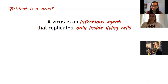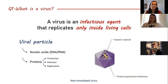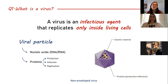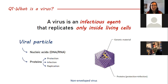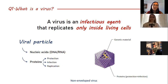A virus is an infectious agent that replicates only inside living cells. Viruses are free in nature in the form of viral particles. Viral particles are formed of nucleic acids — they have a genome, a genetic material inside a structure called a capsid that is formed of proteins. The nucleic acids can be DNA or RNA, and the proteins around them protect them, allow for infection, and allow for replication of the virus.